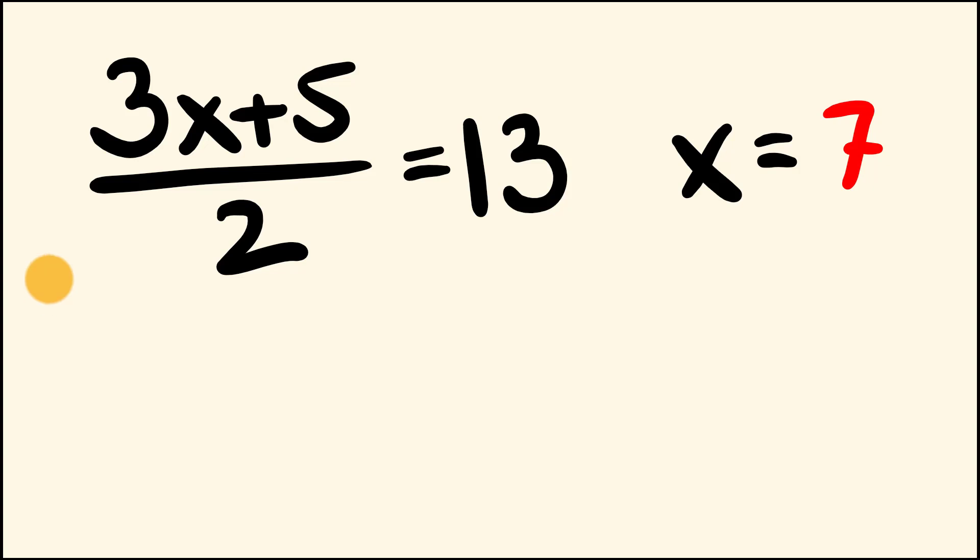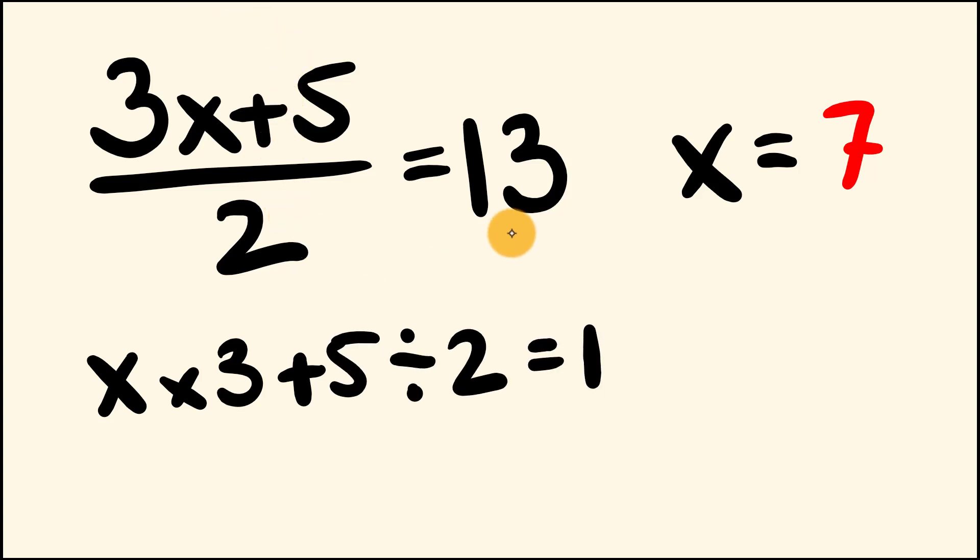So we'll start off by having a look at this example here. We have 3x plus 5 divided by 2 equals 13. And if we look at this equation, we can see the order in which we do things. We start with x, then we multiply that by 3, add 5, divide by 2, and that equals 13.